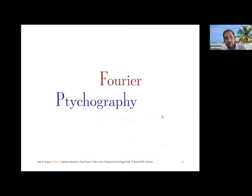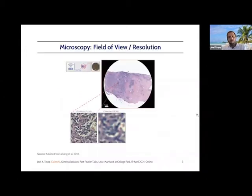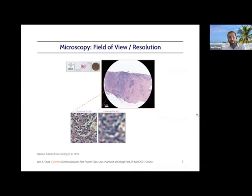I'm going to start by telling you about an imaging problem that leads to a semidefinite program. This will give you an idea about why semidefinite programming is valuable for data analysis and signal processing problems, how some semidefinite programming problems arise, and some of the challenges that appear from these kinds of optimization problems. Let me remind you briefly about the fundamental challenge in optical microscopy. You have a choice between field of view or resolution if you're using conventional optics — either you can image the entire slide at very low resolution, or you can image a tiny piece of the slide at high resolution, but you can't have both.